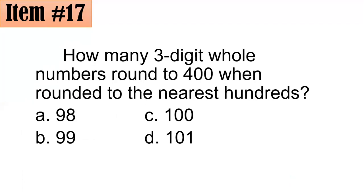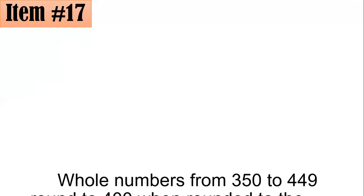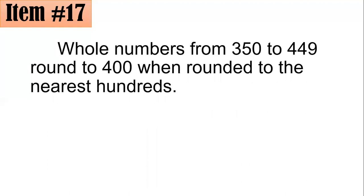Let's proceed to number 17. How many three-digit whole numbers round to 400 when rounded to the nearest hundreds? Is it 98, 99, 100, or 101? So if you are just keen enough, whole numbers from 350 to 449 round to 400. For example, if I have here 350, this is the smallest value. Because the number at the immediate digit at the right is 5, so you have to round up. It will become 400 when rounded to the nearest hundreds.